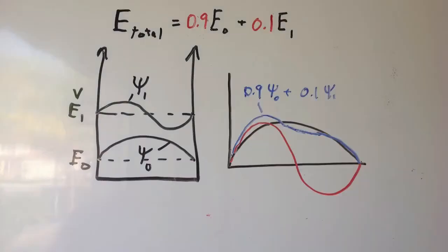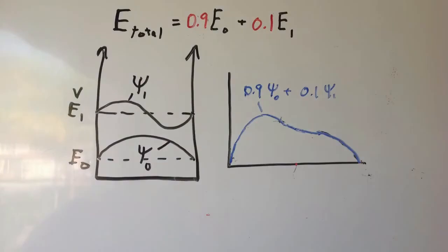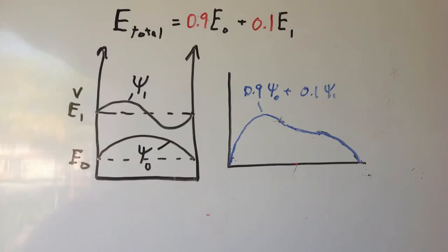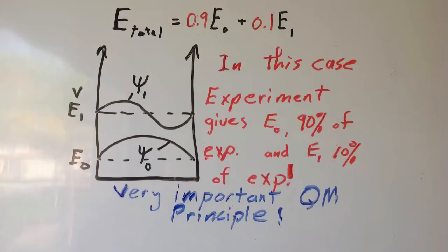We could also put most of the particle in the ground state, which would give less probability oscillating as shown, and in this case give the ground state energy 90% of the time. This may seem counterintuitive but has been borne out through countless experiments. This allows for a continuous energy level as the proportion of each state is changed.